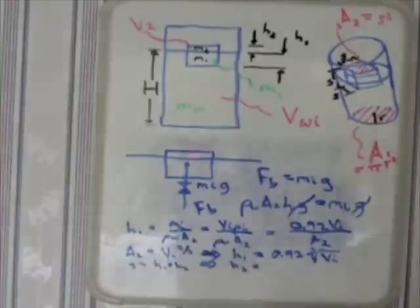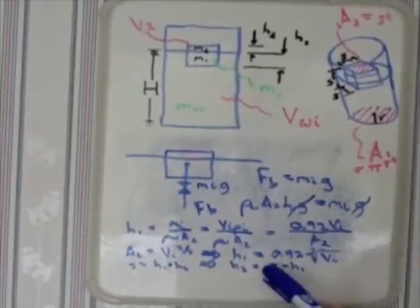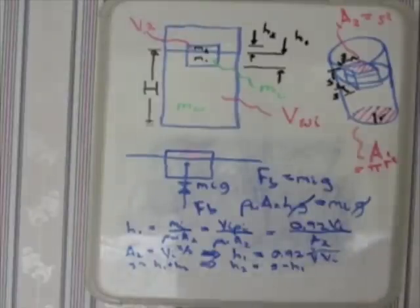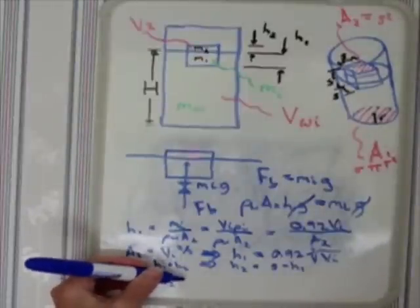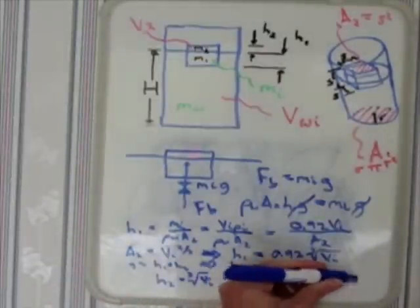So to get the H2 term we can say H2 equals S minus H1 and that can be rewritten as the cube root of VI minus 0.92 times the cube root of VI which winds up being H2 equals 0.08 cube root of VI.